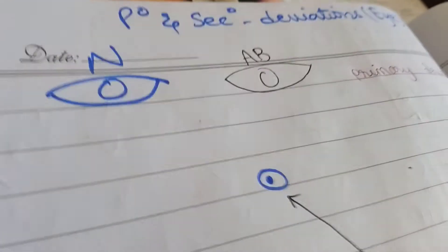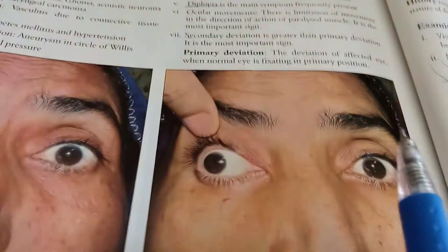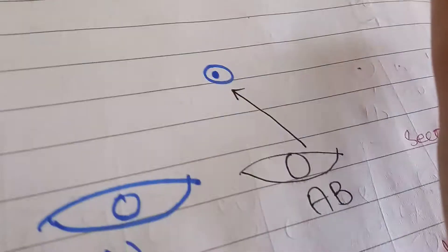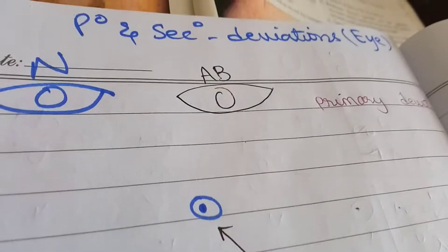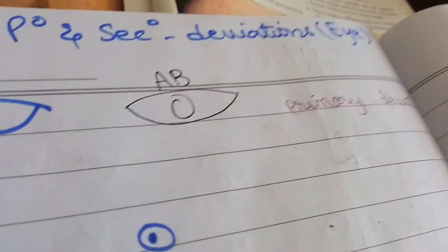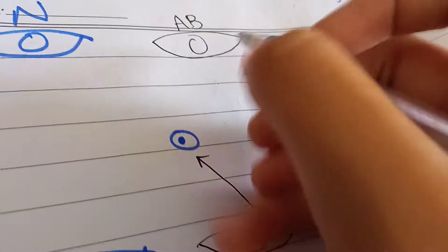What is primary deviation and what is secondary deviation? Here we have a person — a pair of eyes. She is a patient with squint, either due to any nerve palsy or any organic or inorganic condition. In general, whatever the condition, the patient is suffering from squint.